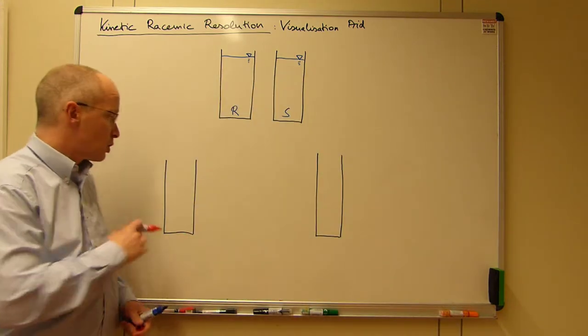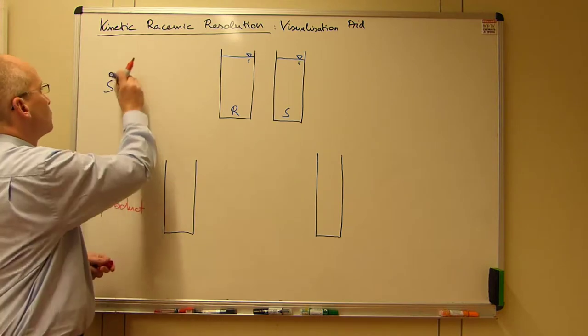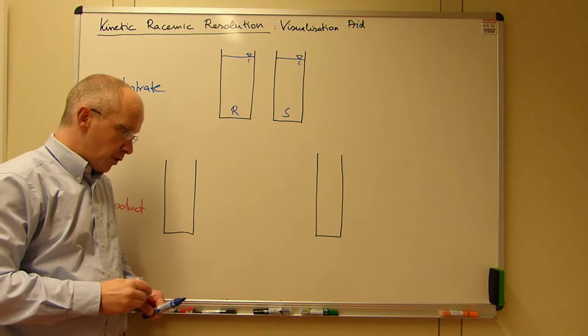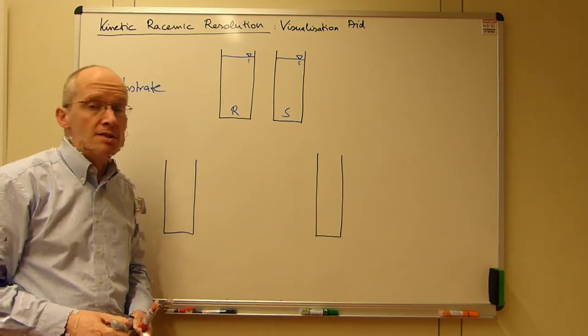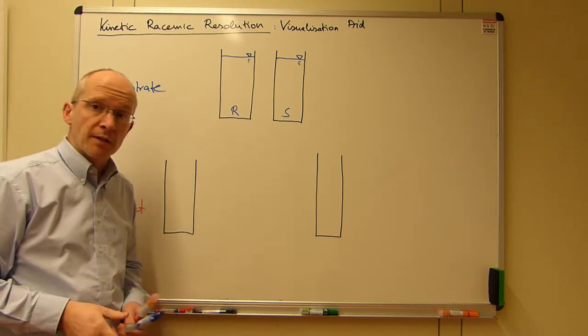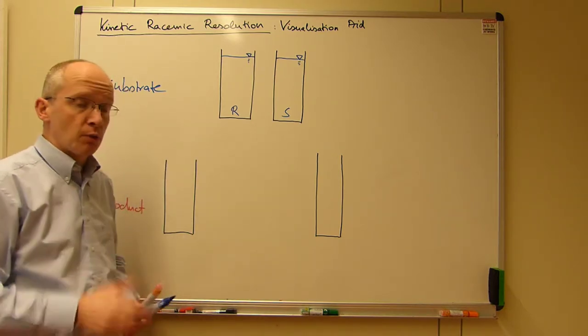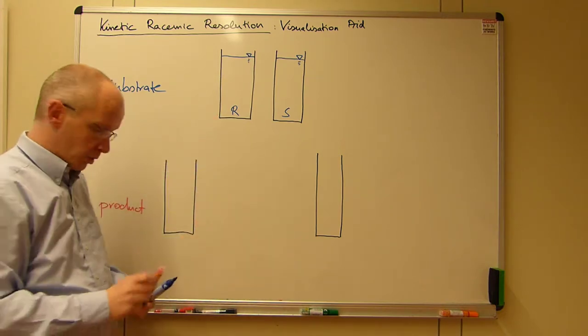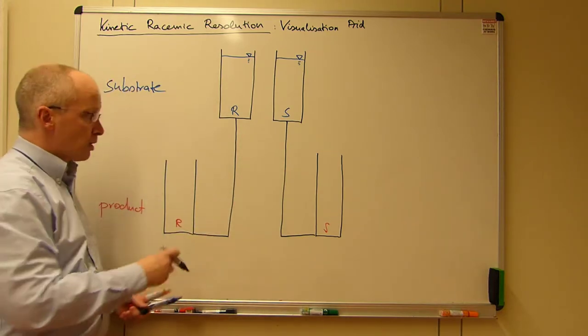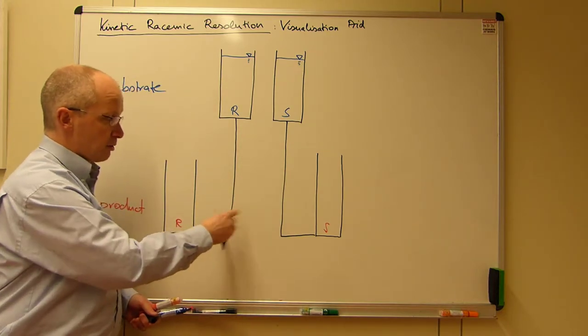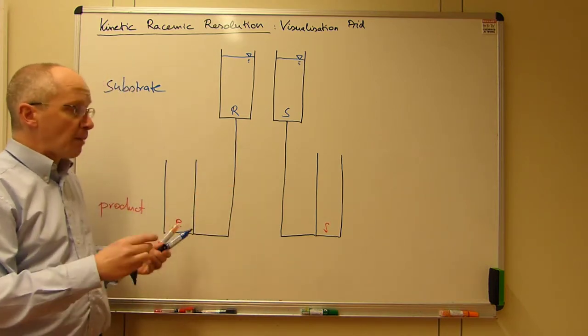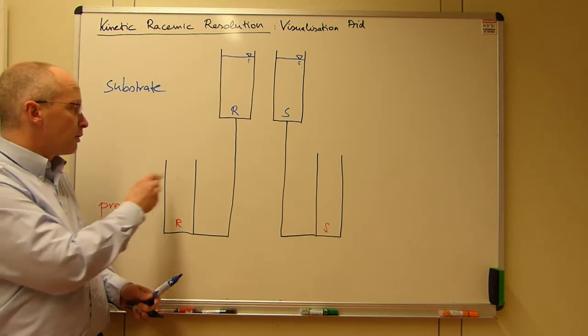We can then imagine two product reservoirs here at the bottom. And if we connect them, what happens is probably rather easy to understand. These are connected tubes and we will drain these two reservoirs into the product reservoirs. So if we would do this with equal-sized tubing and keep everything the same, then of course what happens in the end is that they will be filled up equally.